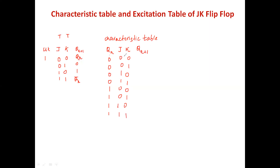When J=0, K=0, look at the truth table — the output is Q(n). Here Q(n) is 0, so the output is 0. When J=0, K=1, the output is 0; it doesn't depend on the previous output. When J=1, K=0, the output is 1. When J=1, K=1, the output is Q(n) bar — here Q(n) is 0 so Q(n) bar equals 1.